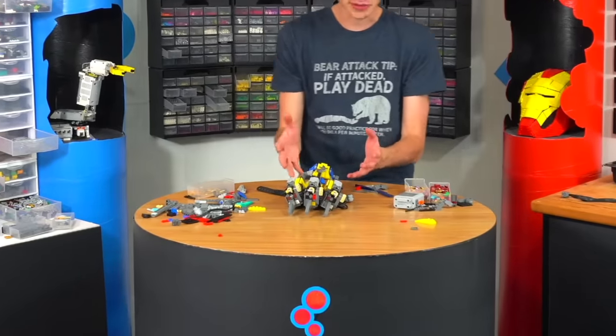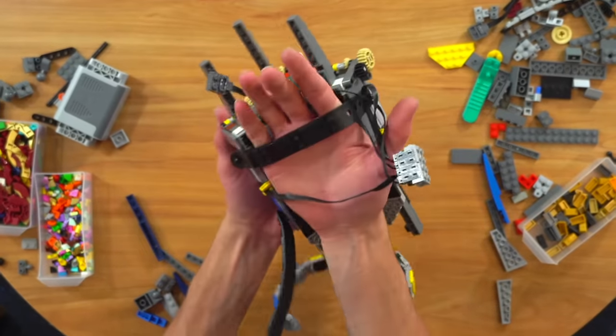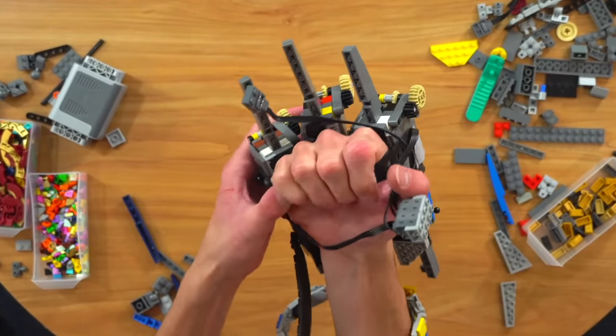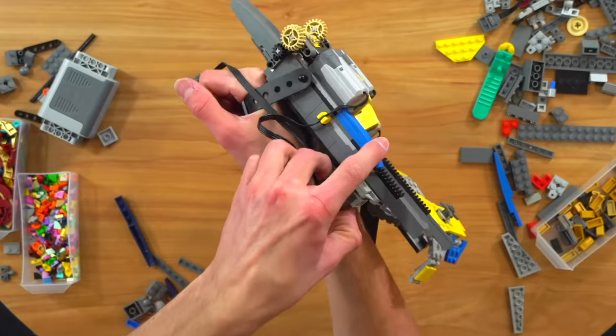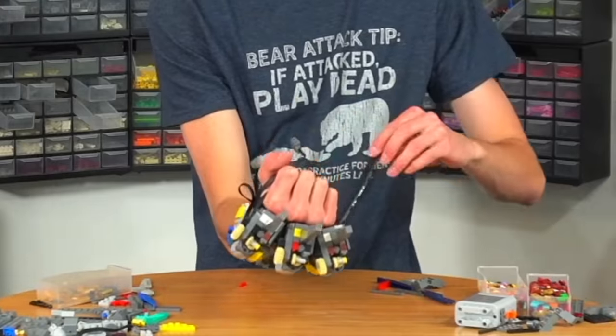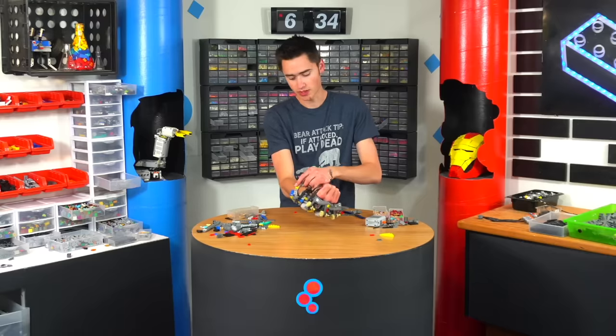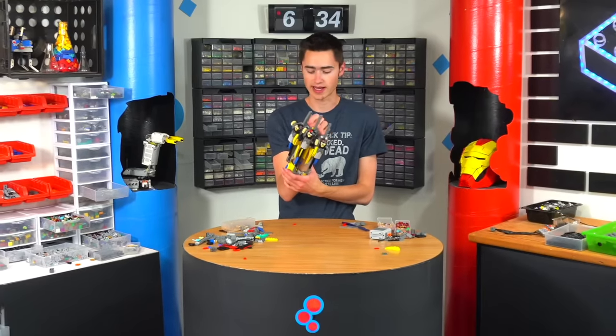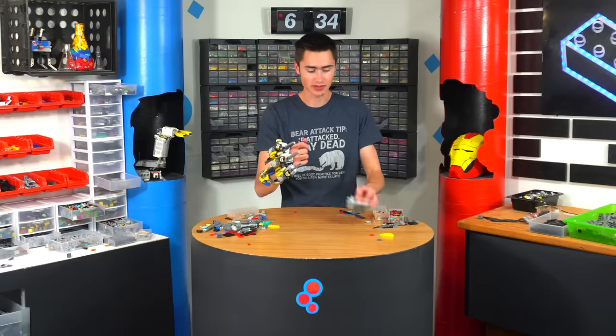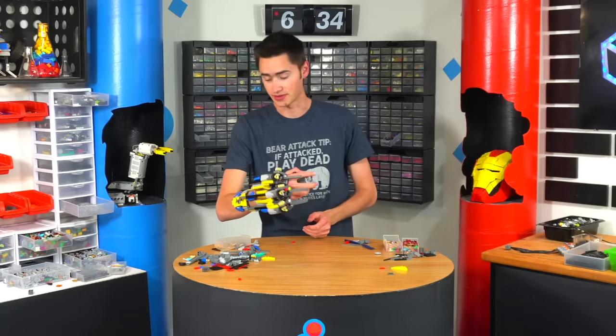All right guys, here it is, the final creation, the working mechanical Wolverine claws. I'm going to show you how to put it on. You basically slide your hand through and this is actually pretty comfortable with this little hand strap. You're going to put your thumb through there. This thing, all the cables snap into here using the brackets, and then this strap comes across just like that, goes on the second notch for me. And then on the bottom this thing snaps in right there.